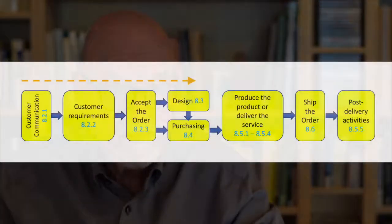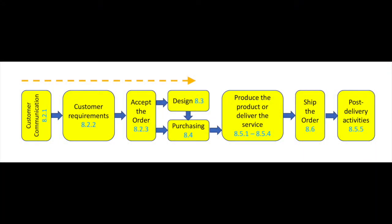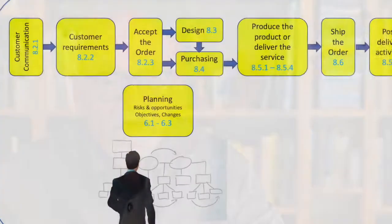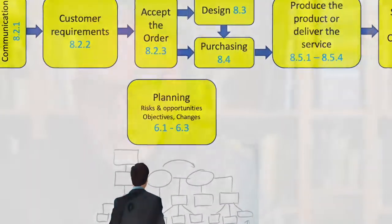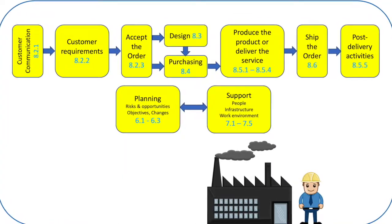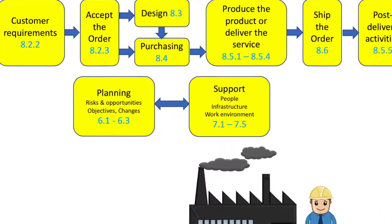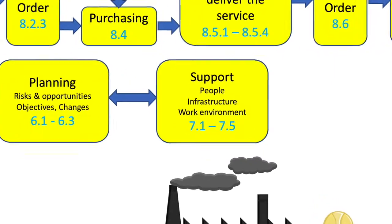We start with your customer and work through the whole customer flow until either your service is delivered or the product leaves the shipping dock — that's clause 8, the operations clause. Then we move to clause 6, the planning clause, then clause 7, the resource clause, where we cover people, infrastructure, and work environment.